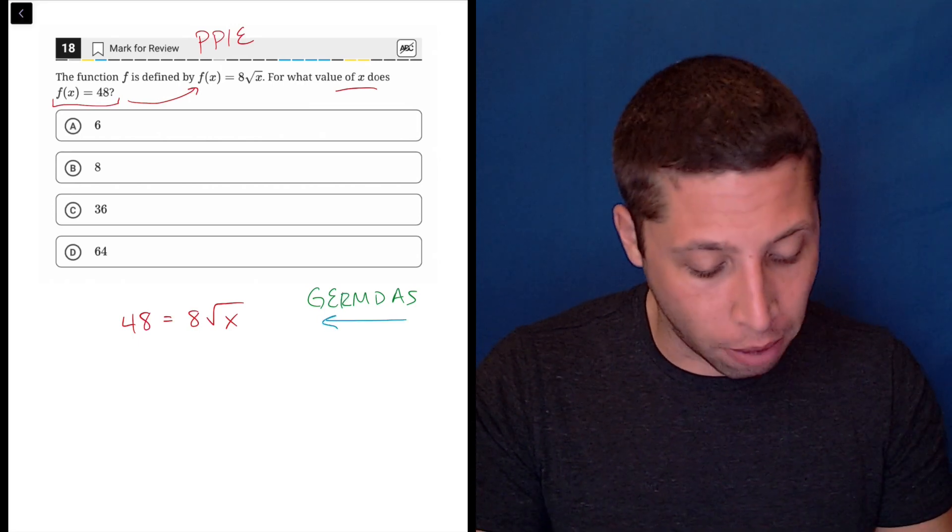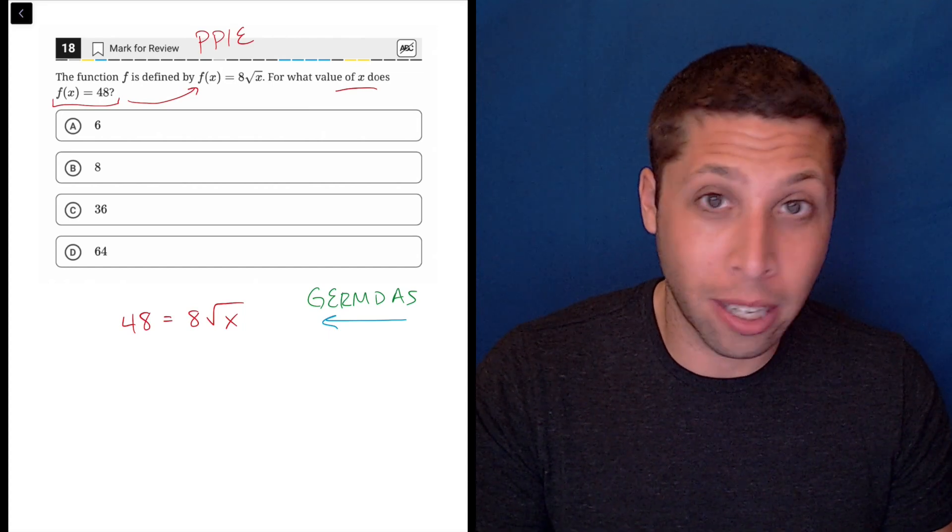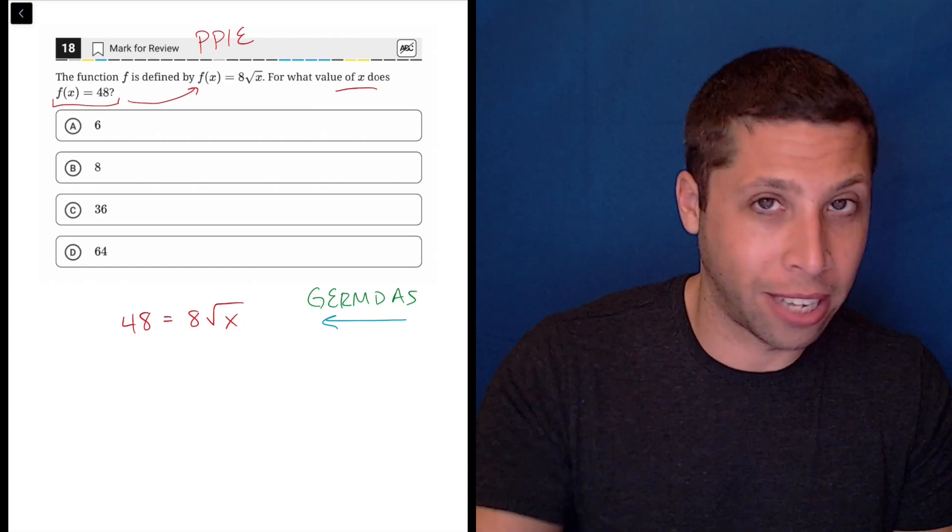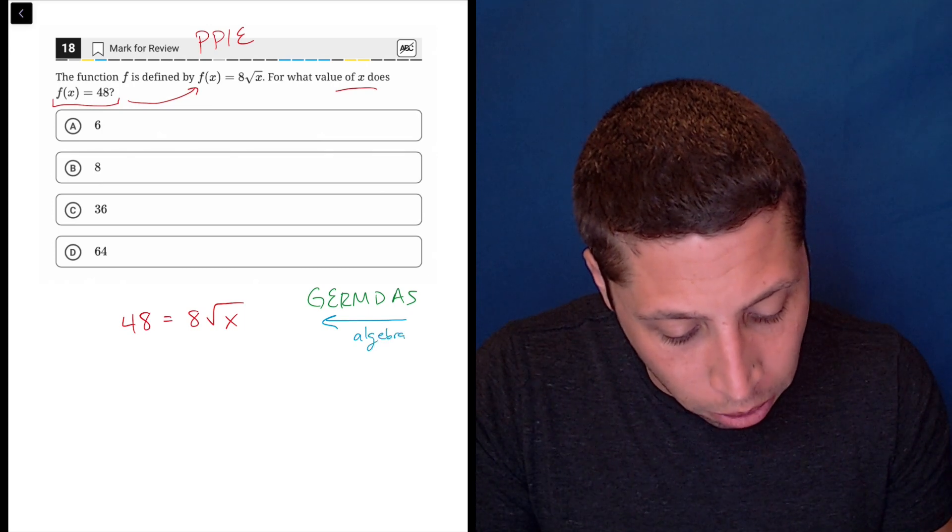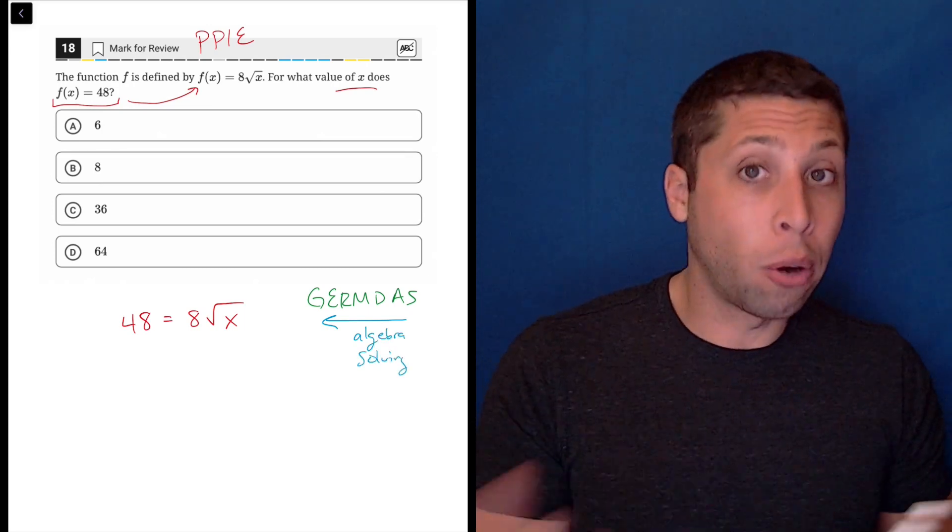So this is what throws people off. If we're just doing arithmetic, we are going to go through g, e, r, and kind of go in the order. But if we're doing algebra, or if you're solving, we're going to go in reverse.